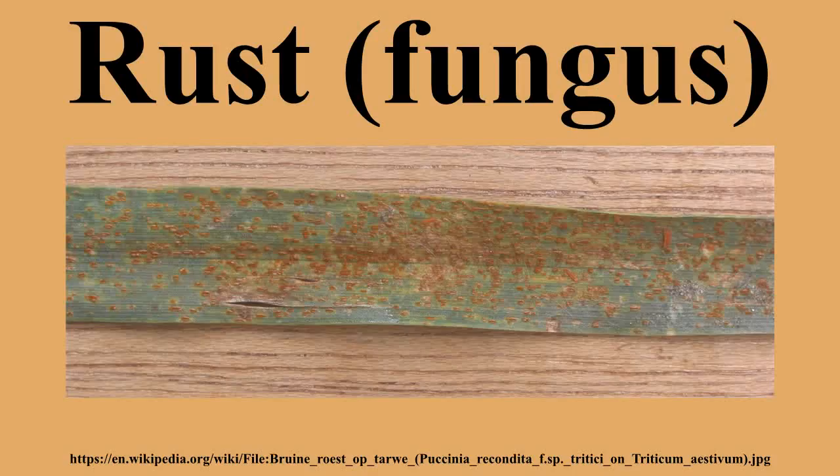Rust fungi can be categorized by how many types of spores are produced during the life cycle. Fungi that produce all five spores are termed macrocyclic. Fungi that lack basidiospores and aeciospores in the life cycle are termed microcyclic and always have an autoecious life cycle. Demicyclic fungi delete the uredinial stage from the life cycle. Understanding the life cycles of rust fungi allows for proper disease management.